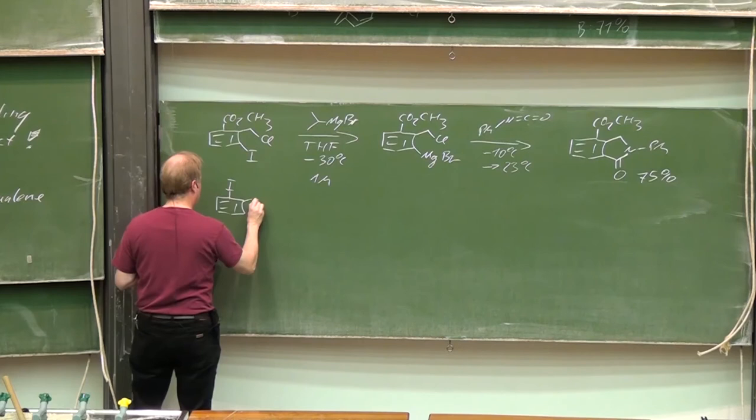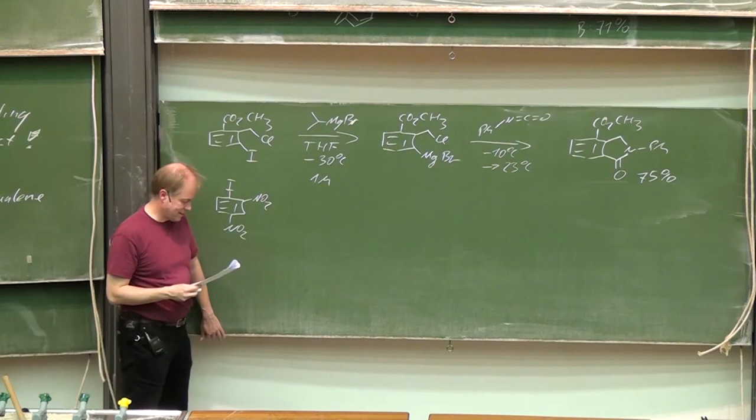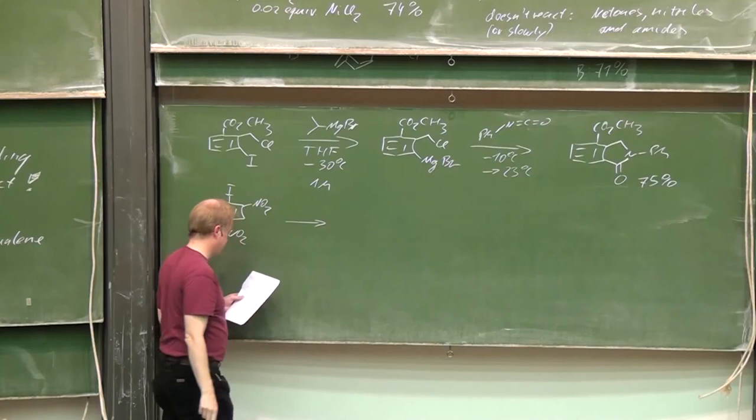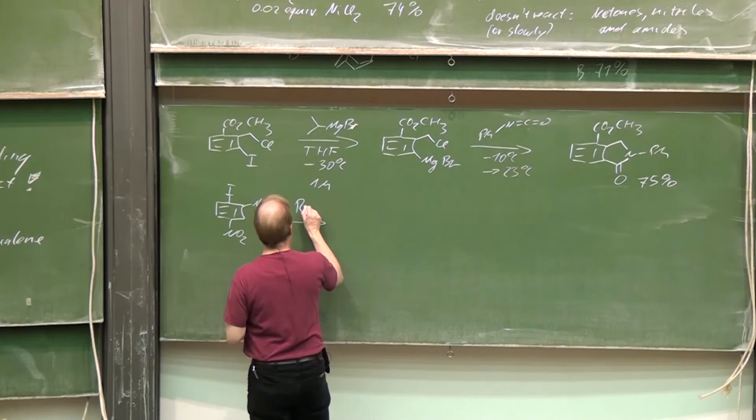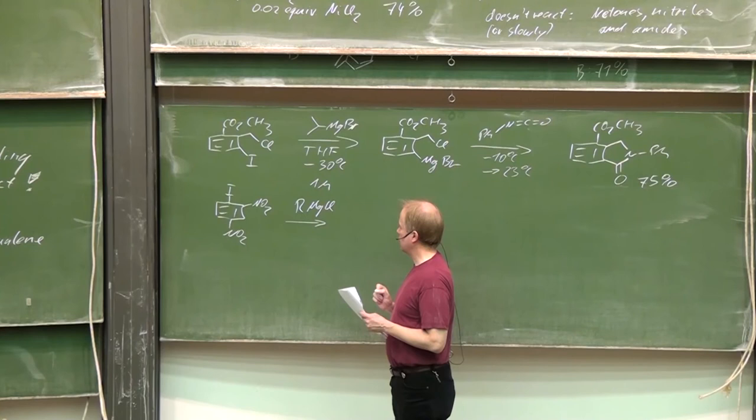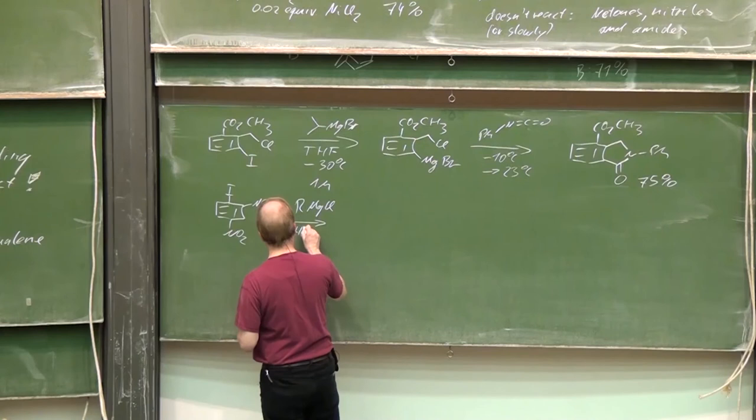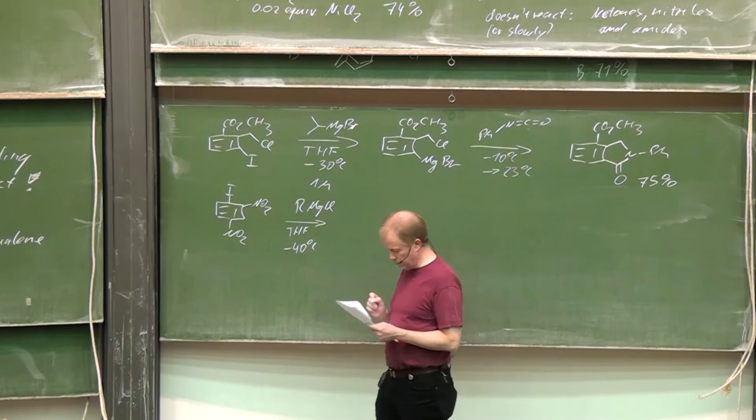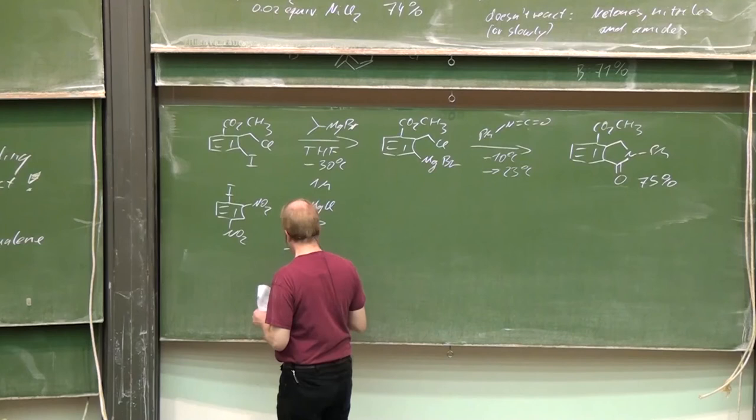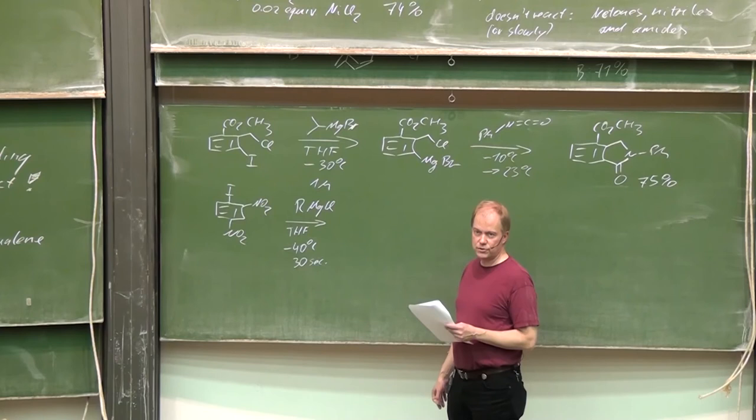Another interesting example: the dinitroiodobenzene. THF in the turbo-Grignard. It looks very well. There is a very fast reaction; they claim that it's done after 30 seconds.